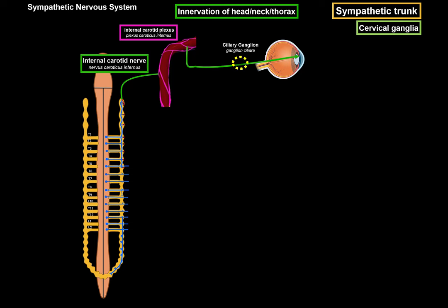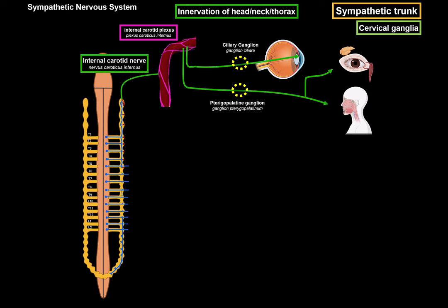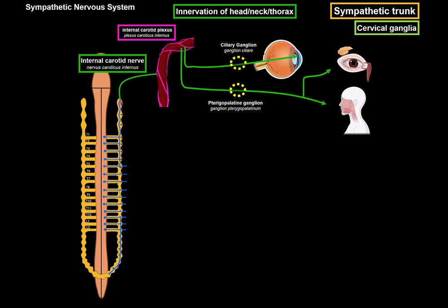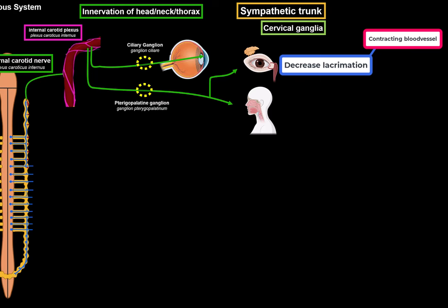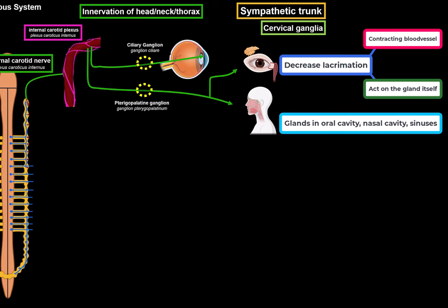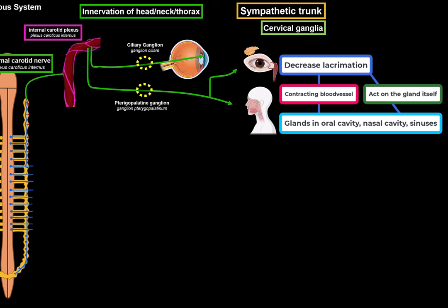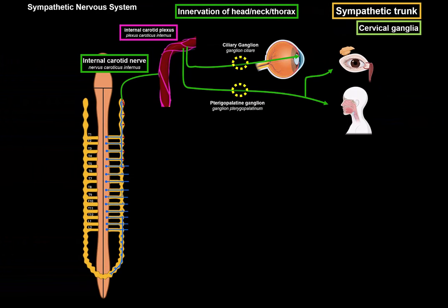From the internal carotid plexus we also get the deep petrosal nerve, which carries sympathetic postganglionic fibers into the pterygopalatine ganglion without synapsing. The deep petrosal nerve acts on blood vessels supplying the lacrimal gland, releasing norepinephrine to decrease blood flow and reduce lacrimation, or it can act directly on the lacrimal gland to decrease tear production. It also acts on glands in the oral cavity, nasal cavity, and sinuses — specifically the maxillary and sphenoid sinuses — causing vasoconstriction, and on salivary glands within the oral cavity to produce thick mucus.